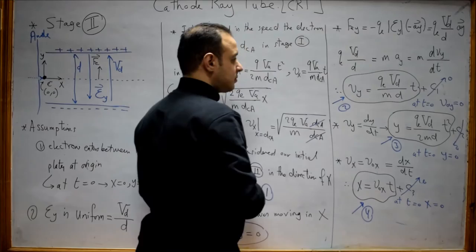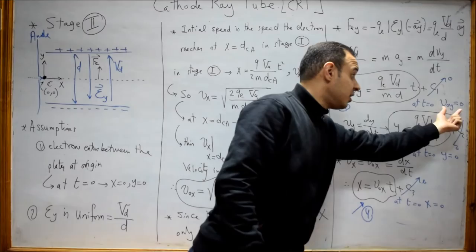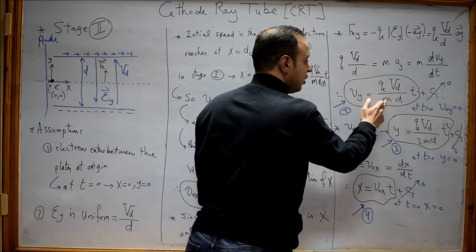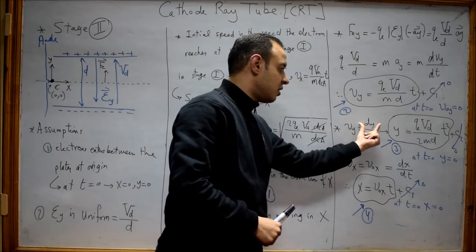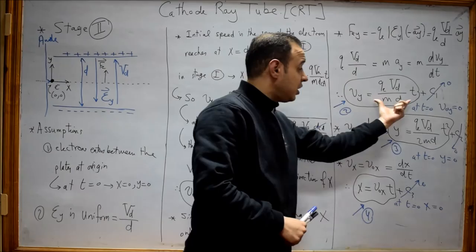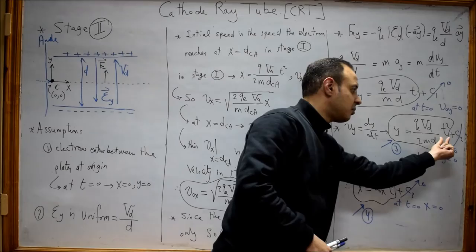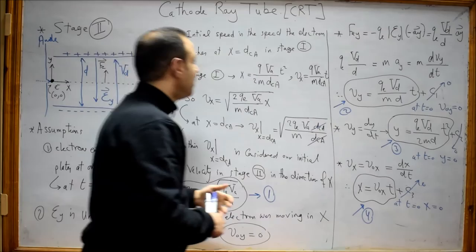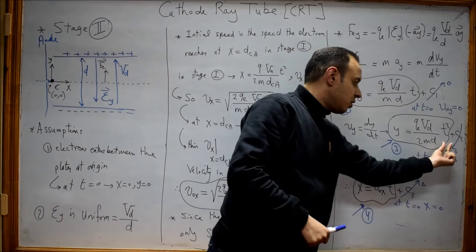Applying the initial condition — at T = 0, V0Y = 0 — the constant C1 equals zero. So Vy = (Q·Vd / M·d)·T. To get displacement in the Y direction, since Vy = dY/dt, I multiply both sides by dt and integrate. The displacement in Y equals (Q·Vd / 2·M·d)·T² plus constant C2. From the initial condition at T = 0, Y = 0, so C2 = 0.